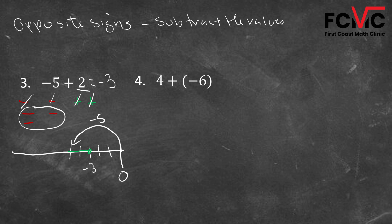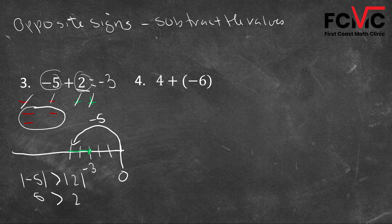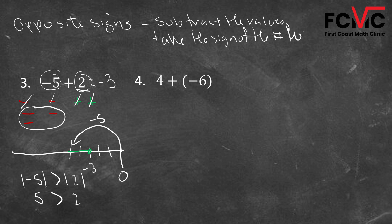If we compare negative five and positive two, we're comparing the absolute value. The absolute value of negative five is five; the absolute value of two is two. The absolute value of negative five is bigger than the absolute value of two. So we want to take the sign of the number that's further from zero, or has a larger absolute value. Absolute value basically means what number is further from zero.